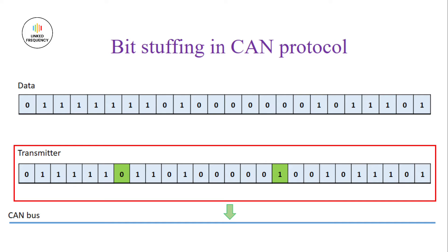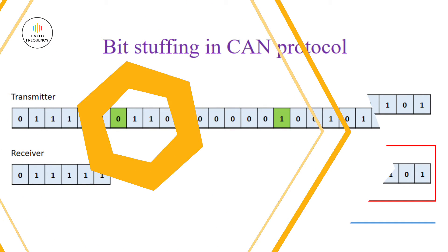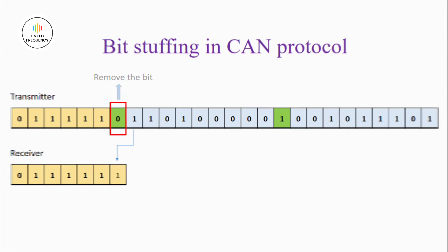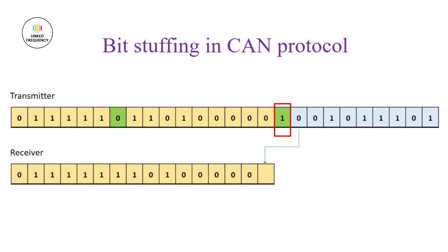The process we followed so far is known as bit stuffing. Now let's look at the receiver side — how exactly de-stuffing happens. The data from the transmitter is received and considered bit by bit. In de-stuffing, after the fifth consecutive value, if there is a bit of opposite polarity, that bit is removed or eliminated. After the removal, further data is taken until a similar situation of five consecutive same values is encountered. A demo of how this happens is shown on screen for reference.